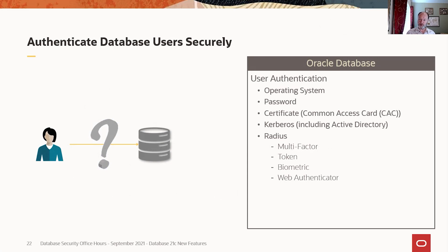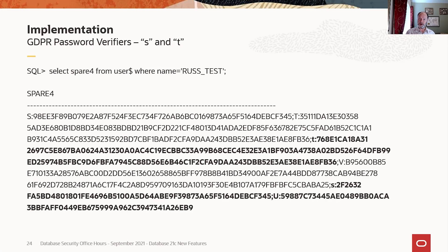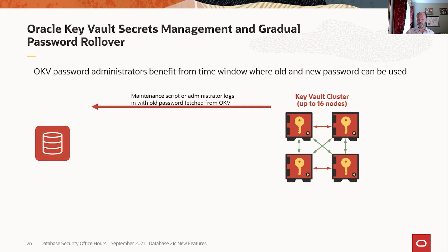Sticking with users, let's look at authentication. If you were with us last month, we talked about one of my favorite features in 21c: gradual database password rollover. At a high level, it does exactly what it sounds like — it lets you change the password for a database account, and for a brief period of time, the old password and new password both work. We implement this with separate password verifiers. In the USER$ table, users with gradual password rollover enabled will show a lowercase 't' for SHA-512 verifiers and a lowercase 's' for SHA-1 verifiers. You can monitor which verifier is being used by looking at the logon audit records, which show whether the old or new verifier was used.